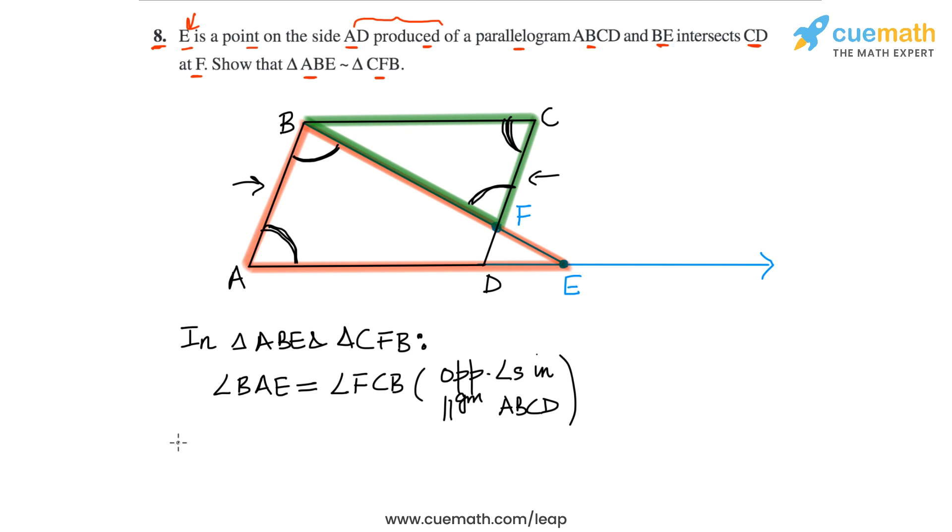Also angle ABE is equal to angle CFB, because these two angles are alternate interior angles. So alternate interior angles for the parallels AB and CD and the transversal BE.